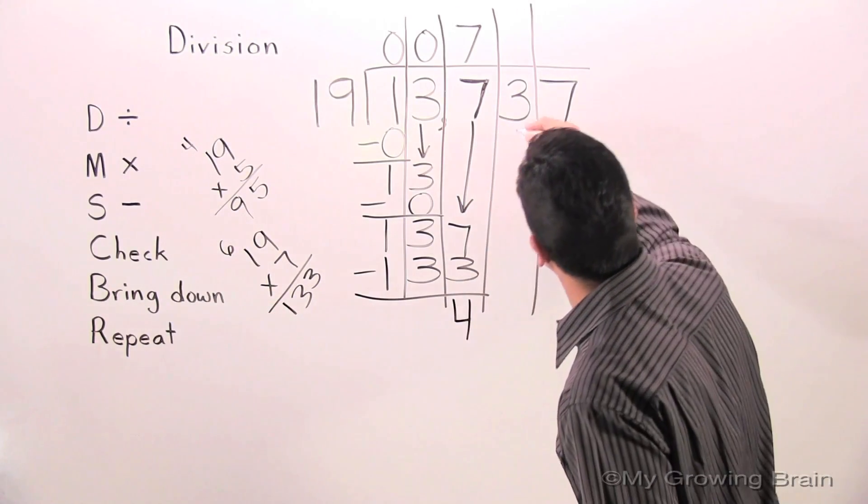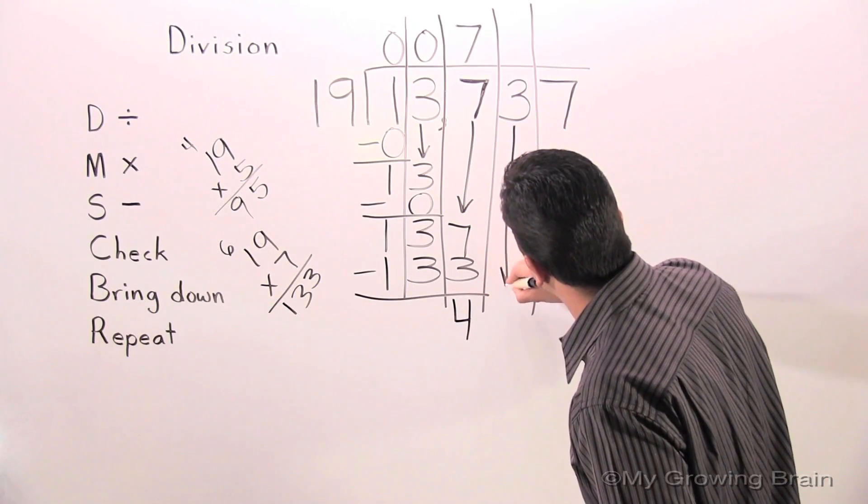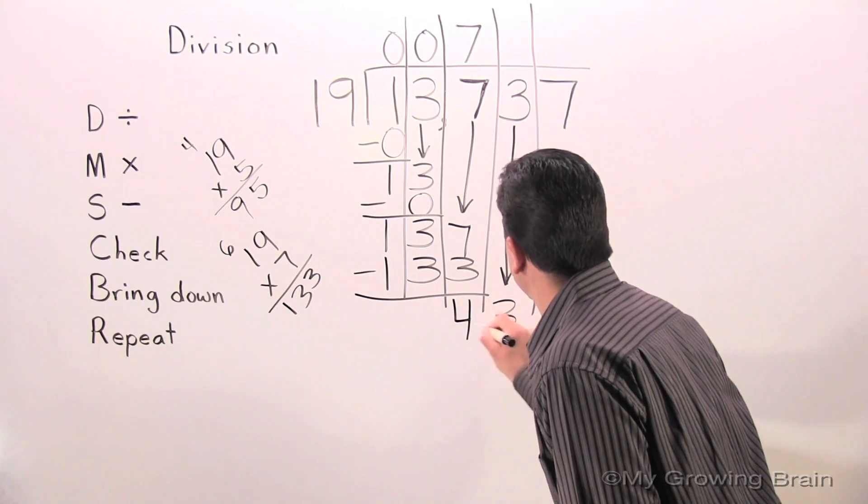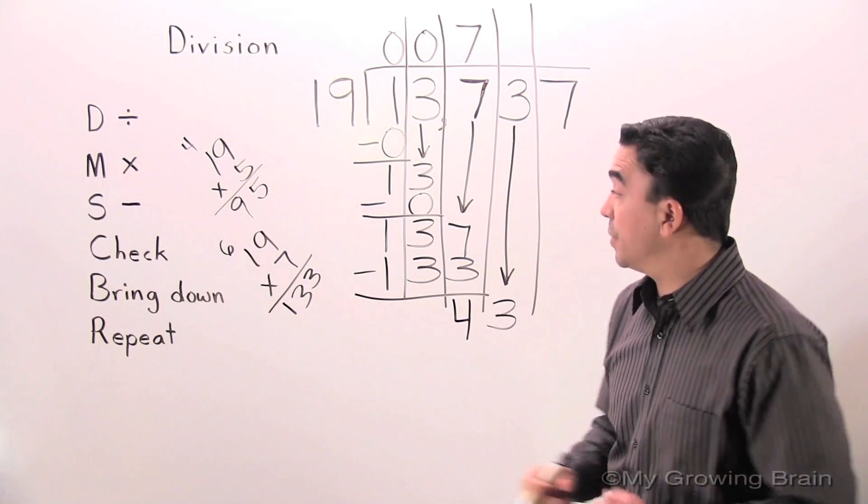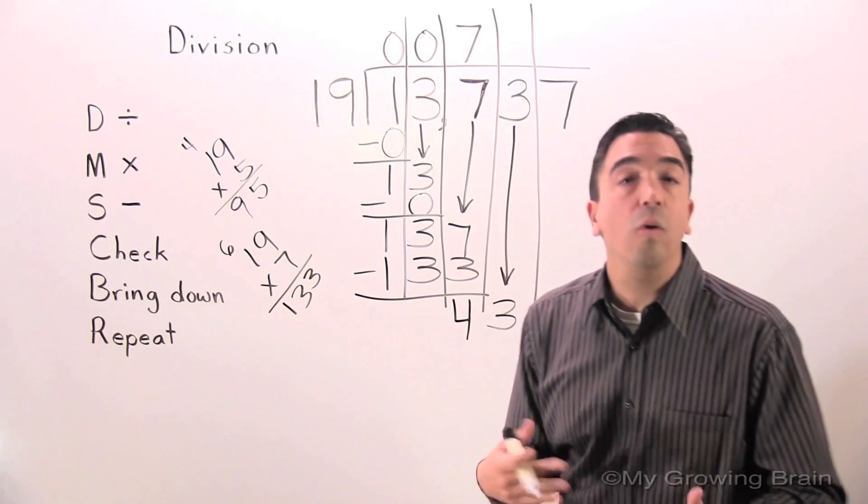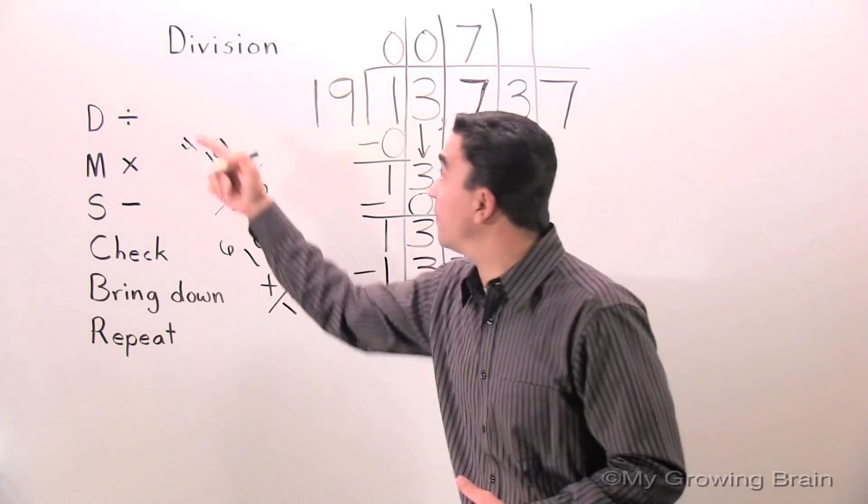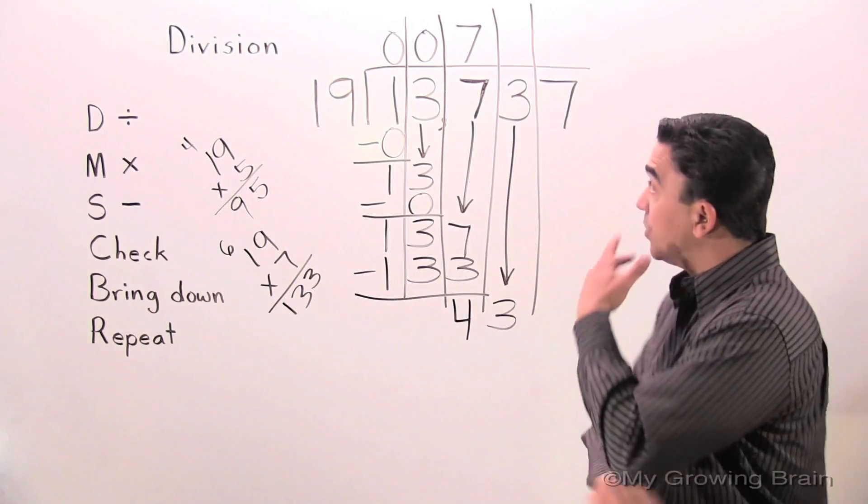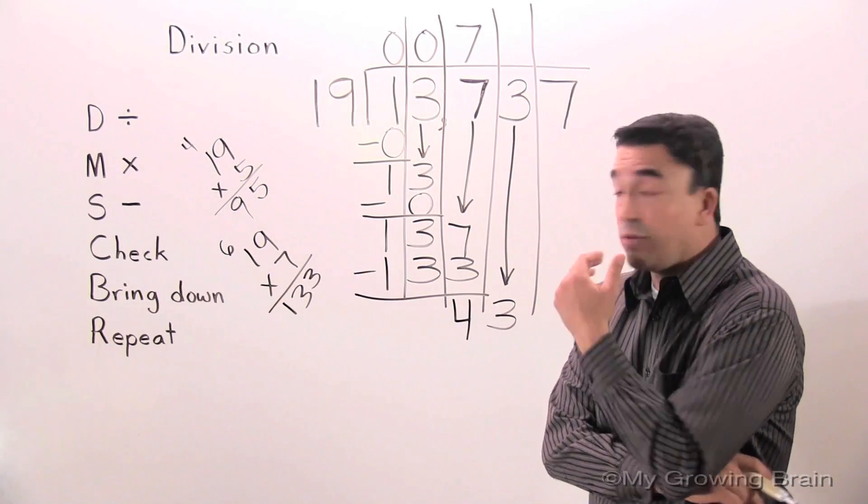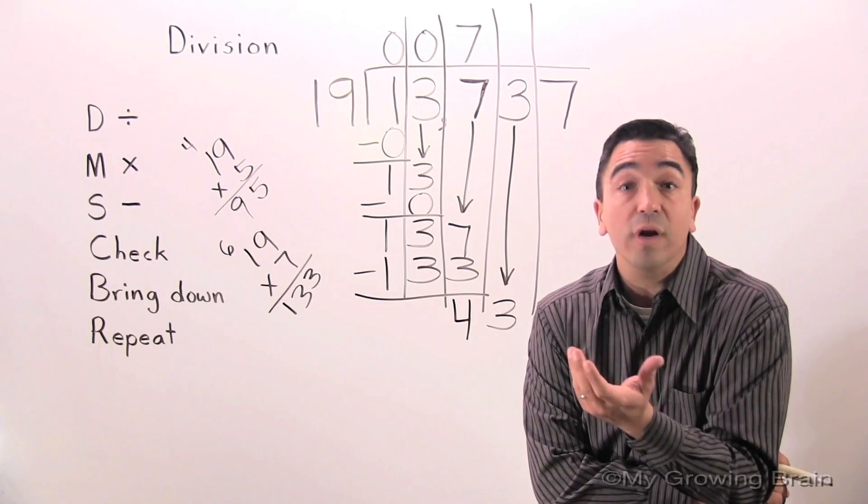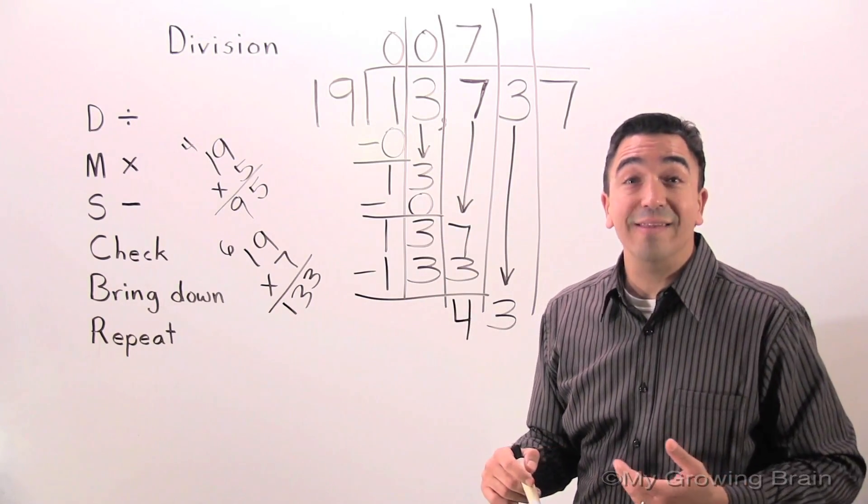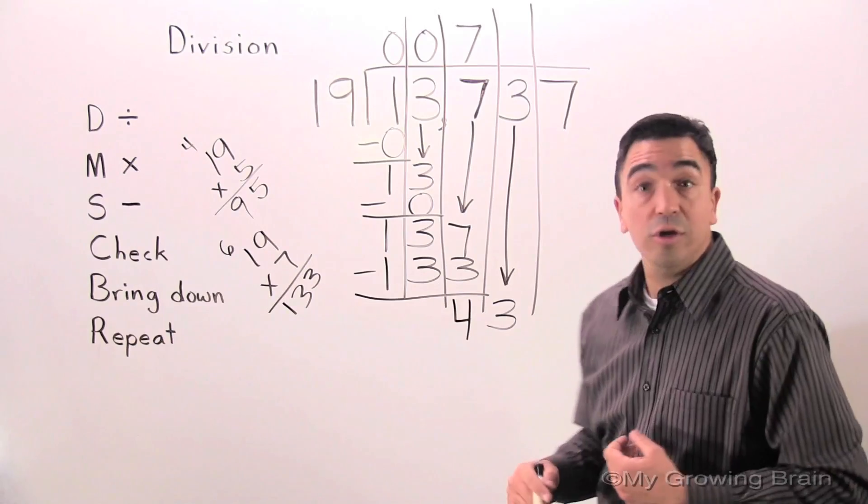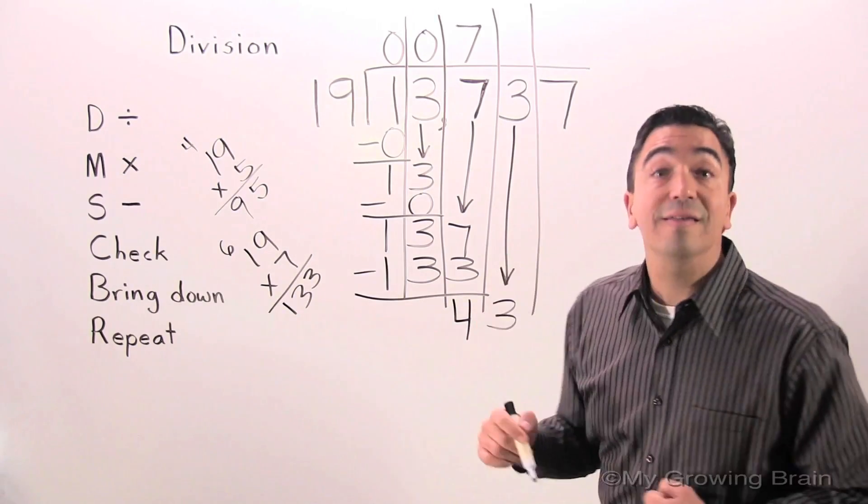Bring down. Next step. Repeat. Repeat the whole process. Back to the top. Divide. 43 divided by 19. Or 19 into 43. Well, I know that 20 plus 20 is 40. So, I know that I'm just going to multiply 19 times 2. And that should give us the next digit.